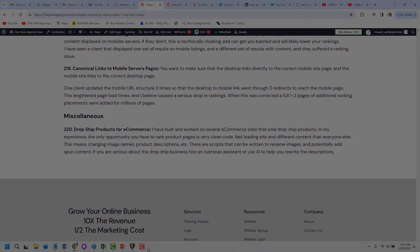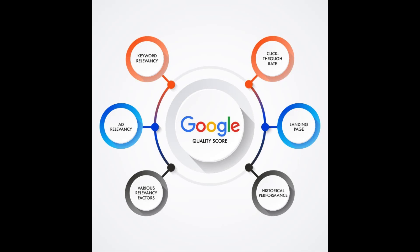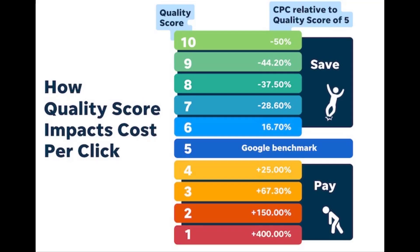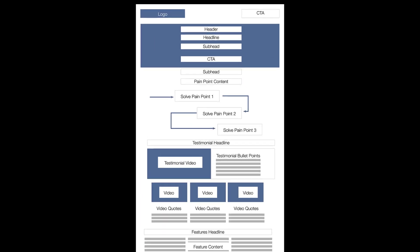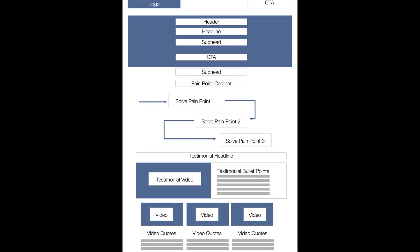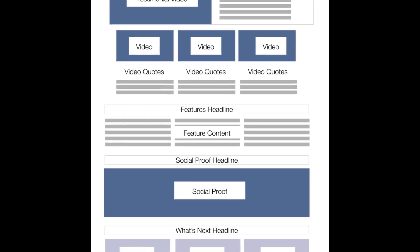Advertising platforms use a similar SEO algorithm to determine your quality score — an arbitrary score given to each page based on how it relates to the keyword. This helps advertising platforms keep irrelevant information off certain searches, but it also allows them to artificially inflate the price of a click. The code structure for these pages is similar to SEO structure with a few major differences.